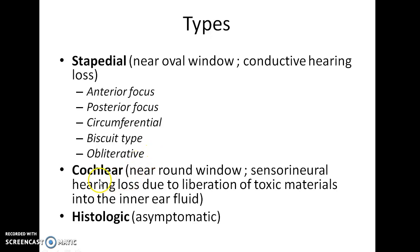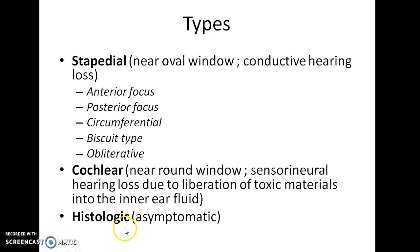In Cochlear Otosclerosis, the spongy bone is deposited near the round window. This leads to sensorineural hearing loss due to liberation of toxic materials into the inner ear fluid. There is another type called Histologic Otosclerosis, where you can see the microscopic findings of Otosclerosis but the condition is asymptomatic.